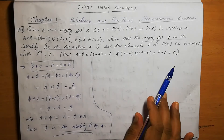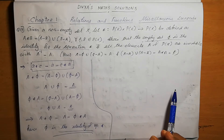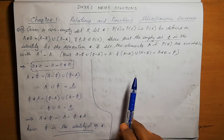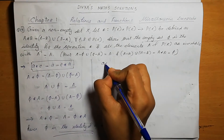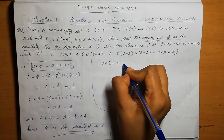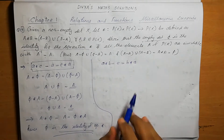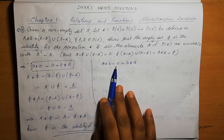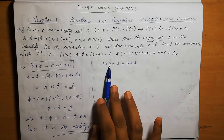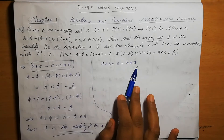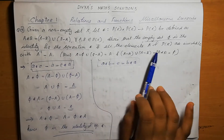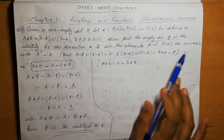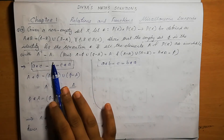Next we take the invertible form. The invertible definition is: A star B equals E equals B star A. That means if an element A in the set is invertible, there exists an element B such that A star B equals E equals B star A. We are going to prove all elements of P(X) are invertible with A inverse equal to A.